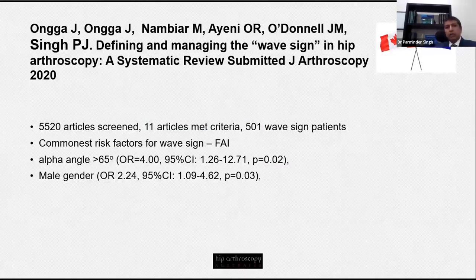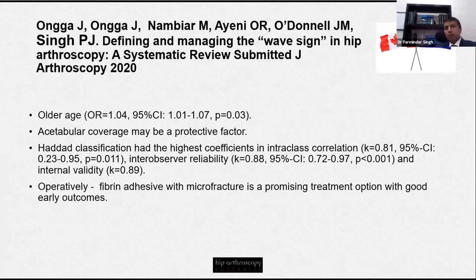We recently completed a systematic review submitted to the Journal of Arthroscopy looking at defining and managing the wave sign. We found that the commonest risk factor was femoral-acetabular impingement — particularly large alpha angles — and it was more common in males. Acetabular over-coverage appeared to be a protective factor, and it was more common in older age groups. The Haddad classification was the most reliable, and fibrin glue was the most commonly reported treatment option with some good early outcomes.